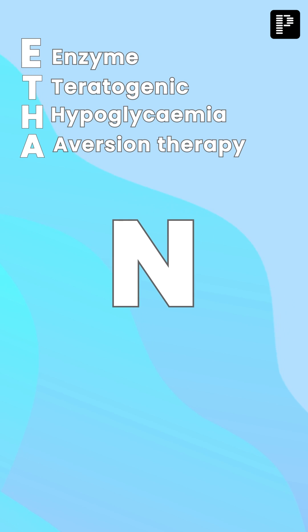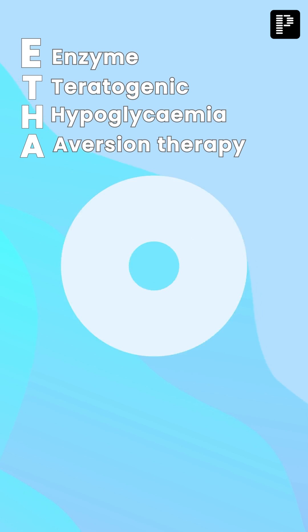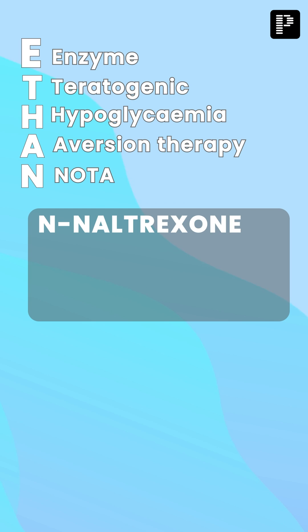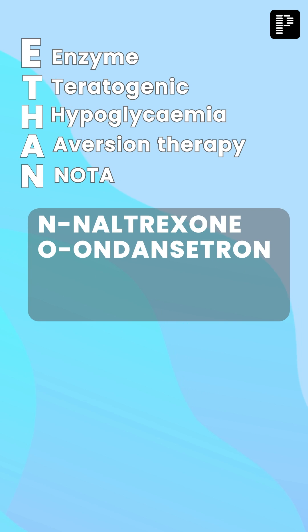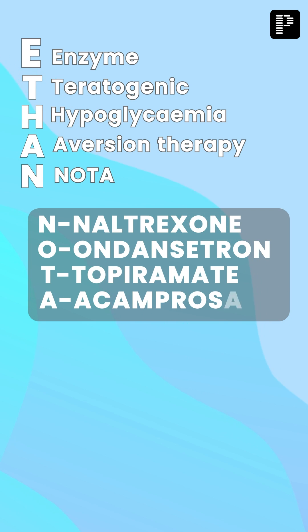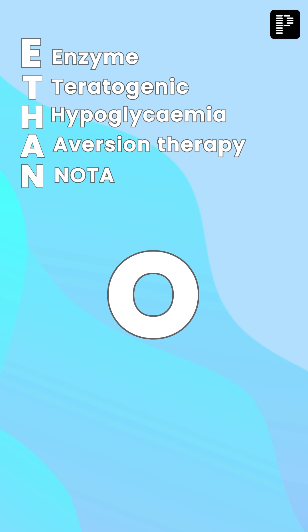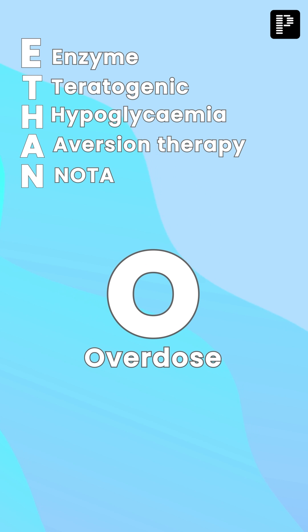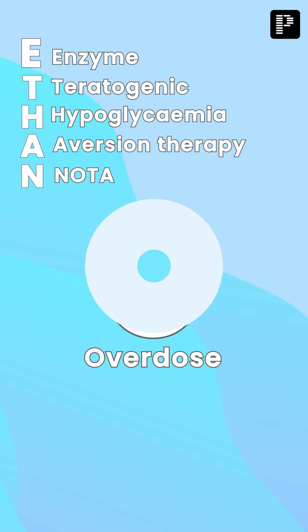The next letter is N — N stands for NOTA. These NOTA drugs are used to decrease craving in alcohol dependence: N for naltrexone, O for ondansetron, T for topiramate, and A for acamprosate.